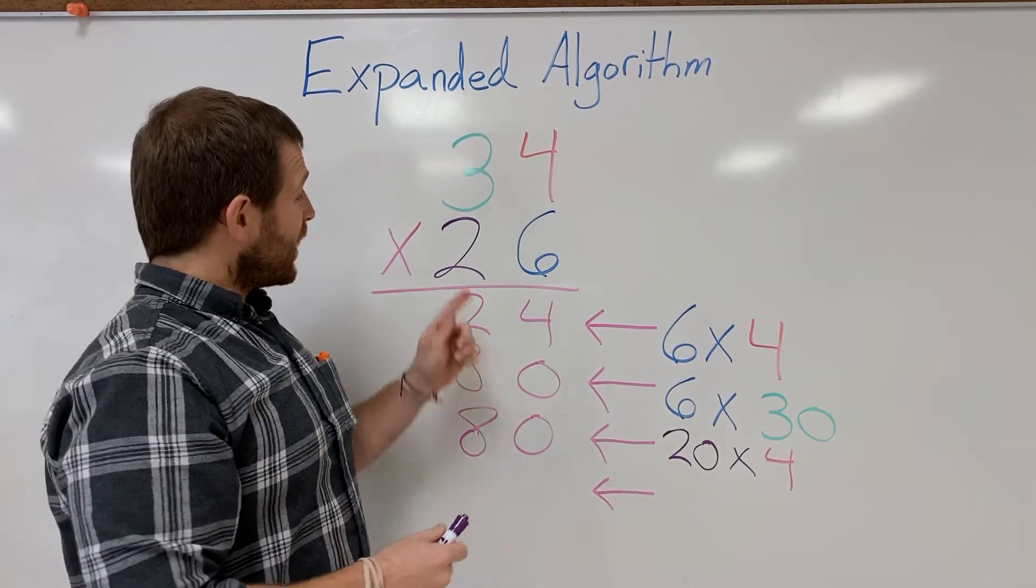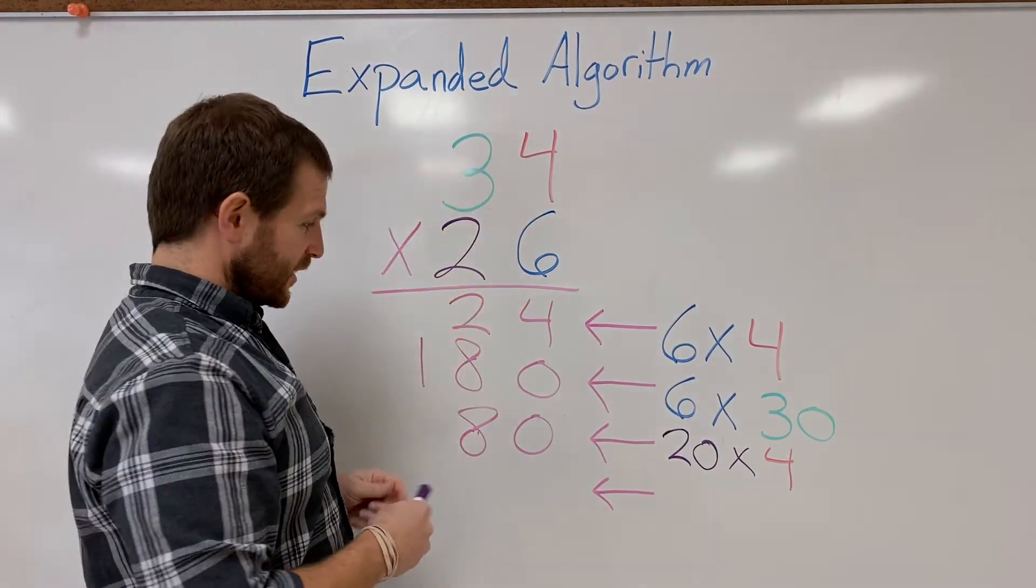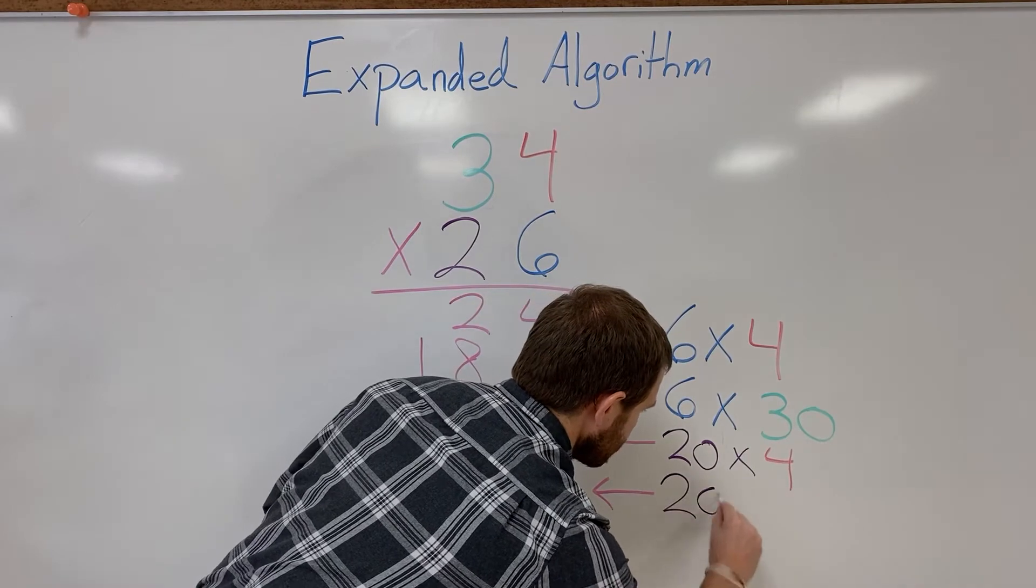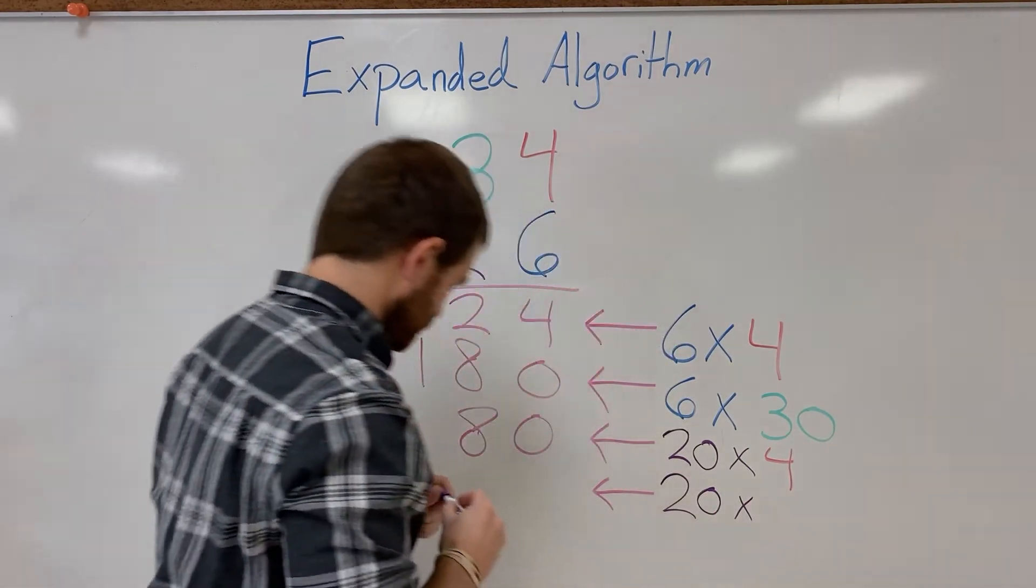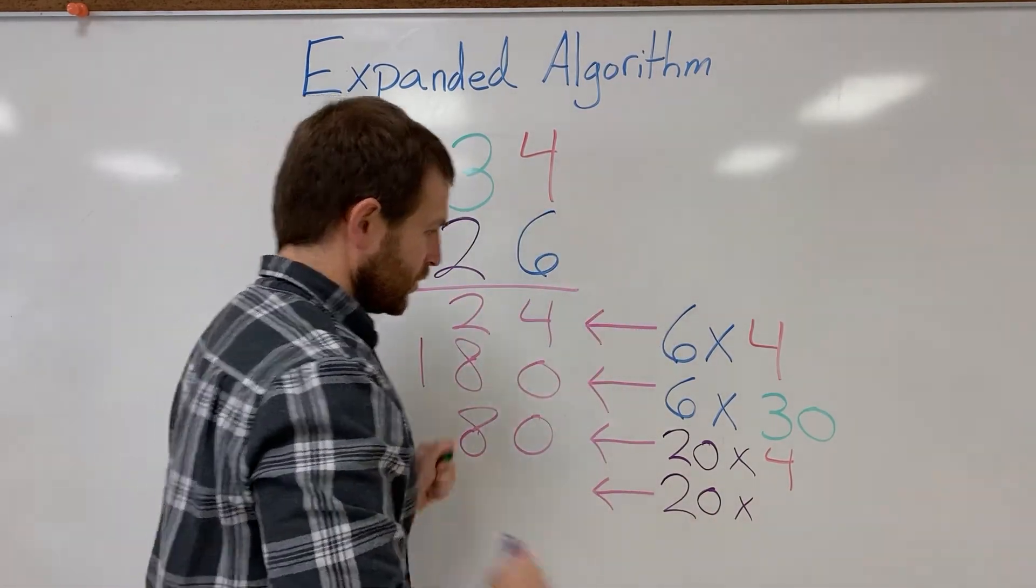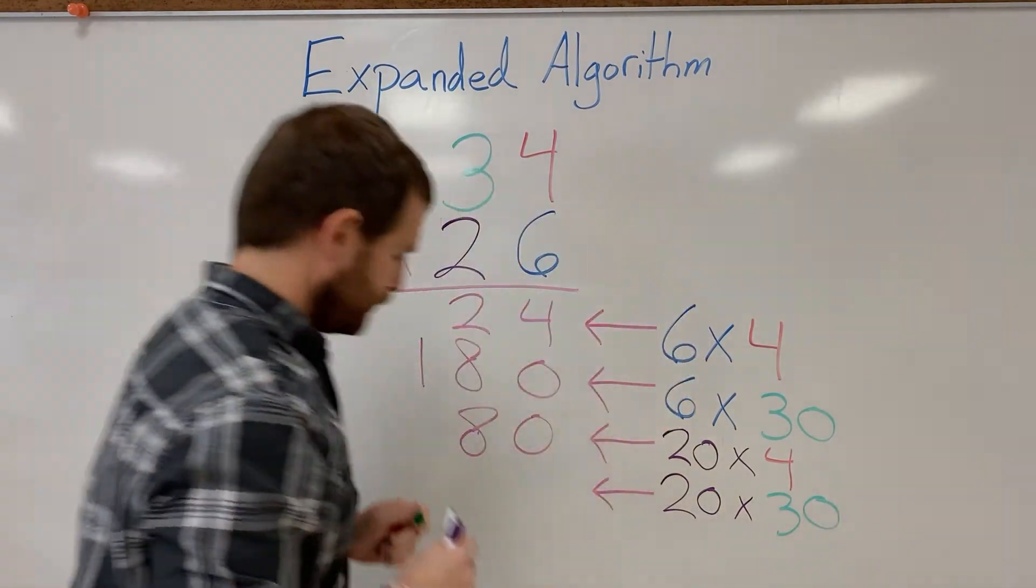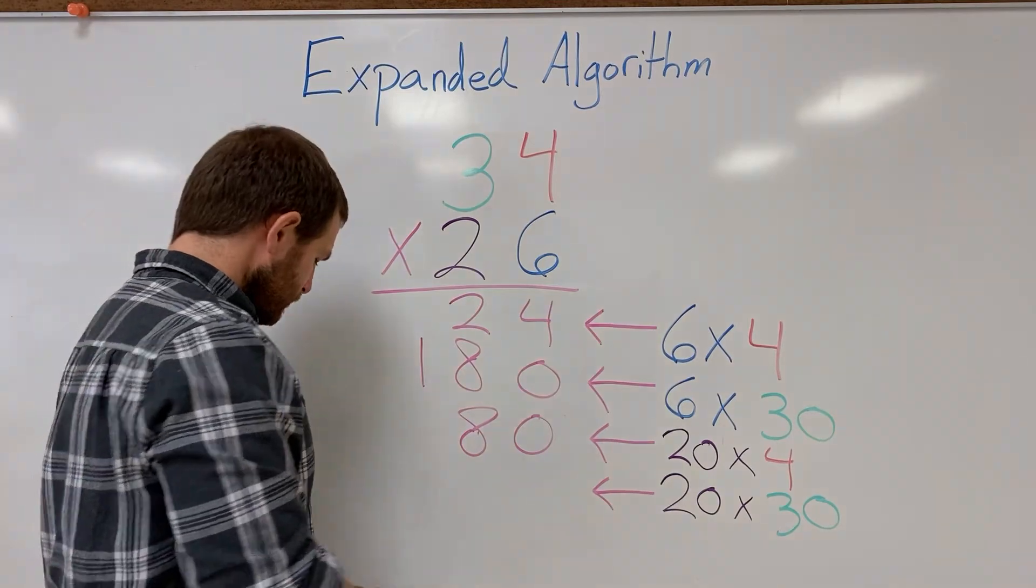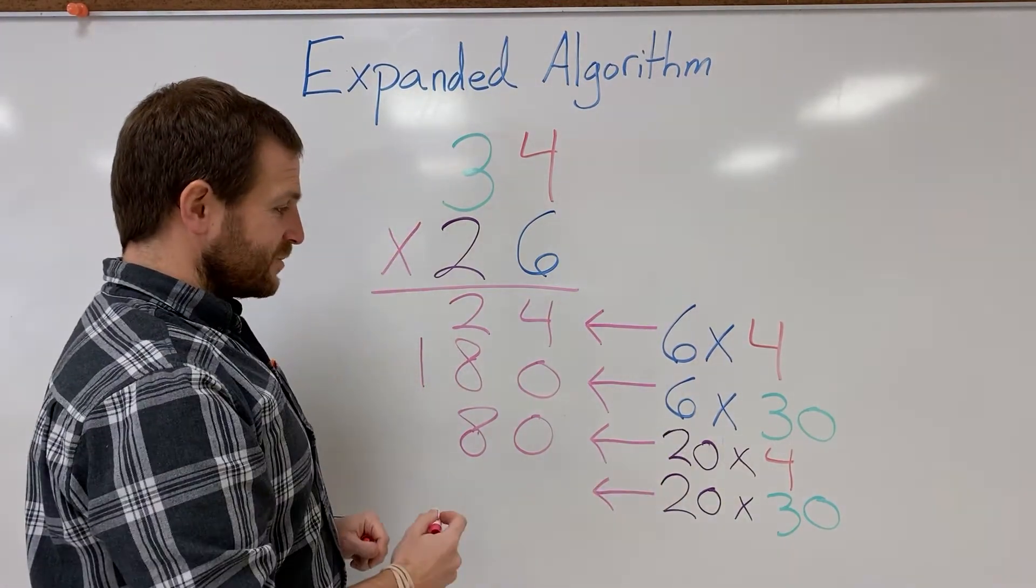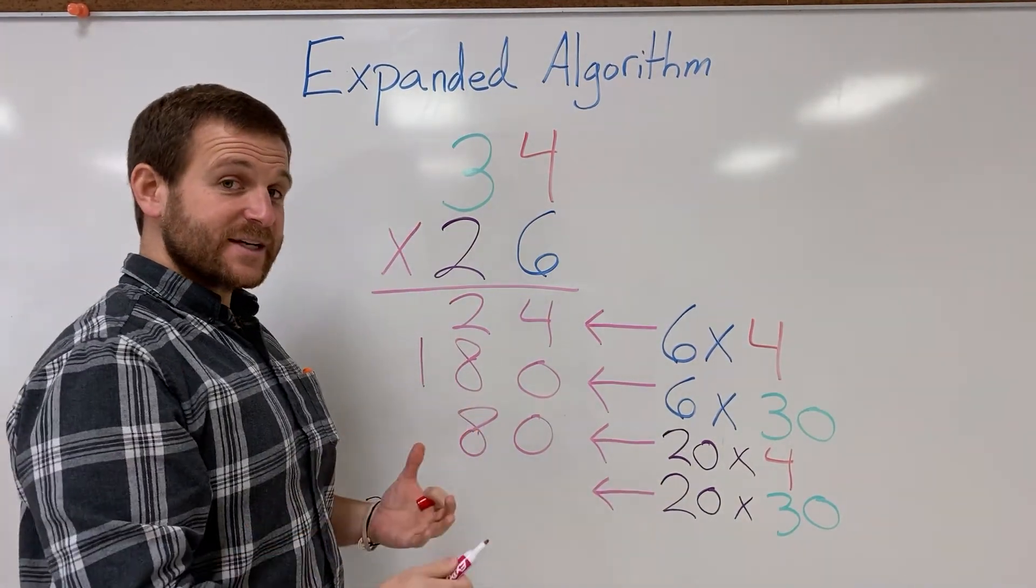Next up, I want to do 20 times 30. Green for 30. And 20 times 30 is gonna give me 6 hundreds.